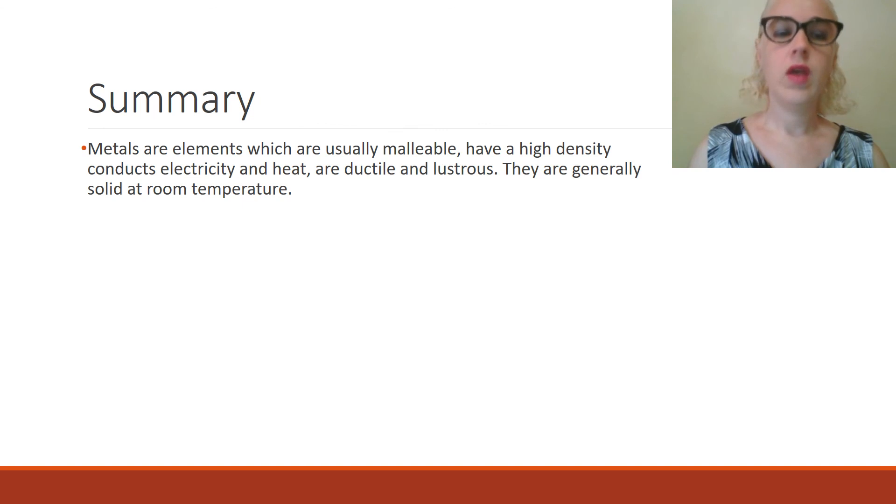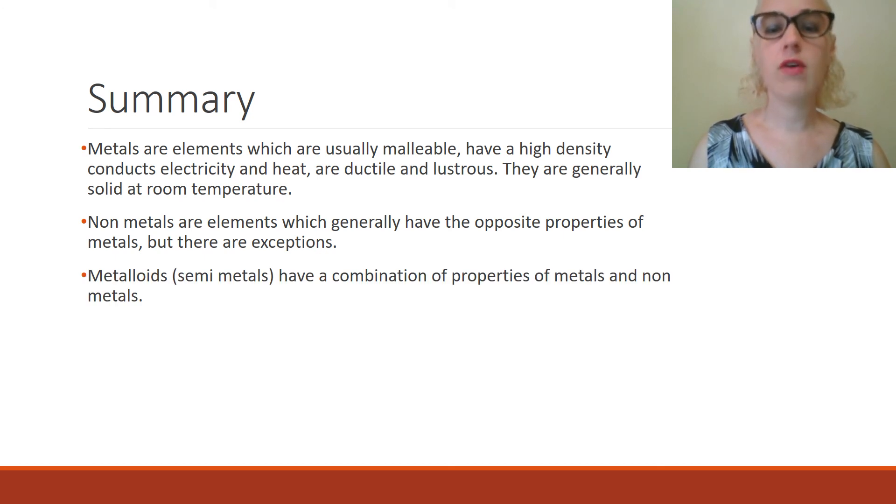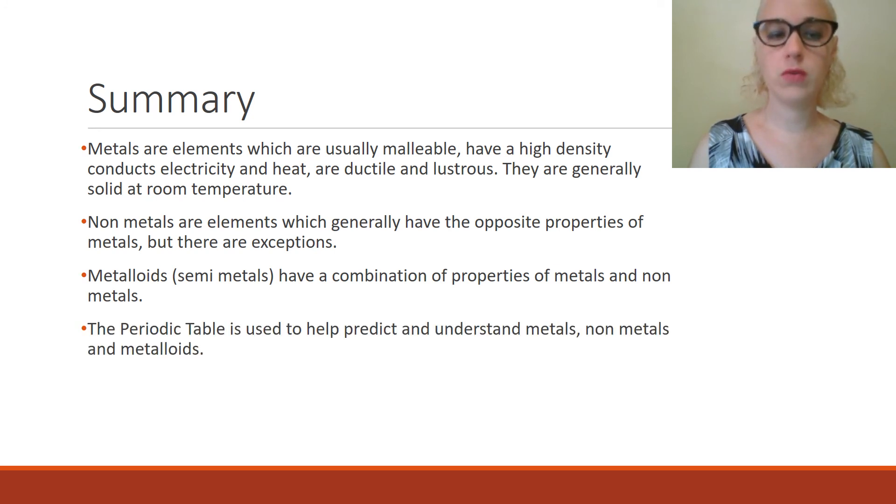In summary, metals are elements which are usually malleable, have high density and conduct electricity and heat, and are ductile and lustrous. They are generally solid at room temperature. Non-metals are elements which generally have the opposite properties of metals, but there are exceptions. Metalloids, which can also be called semi-metals, have a combination of properties of metals and non-metals. And the periodic table is used to help predict and understand metals, non-metals, and metalloids.